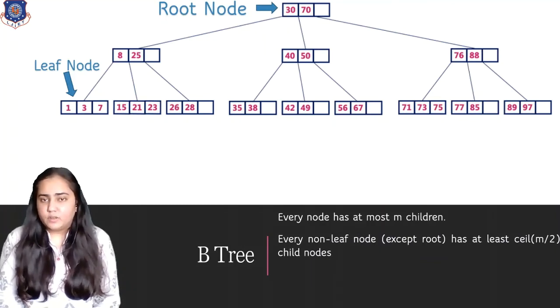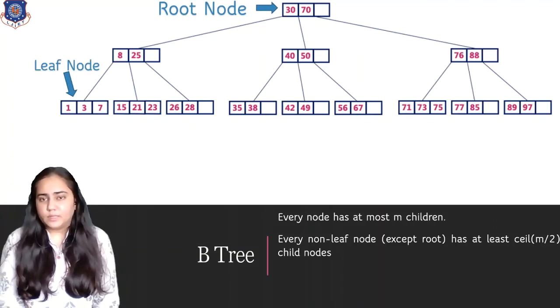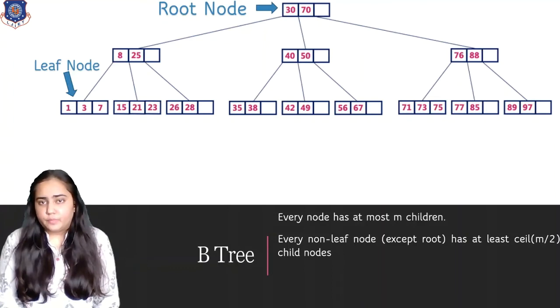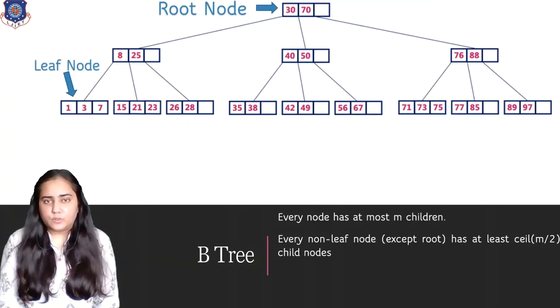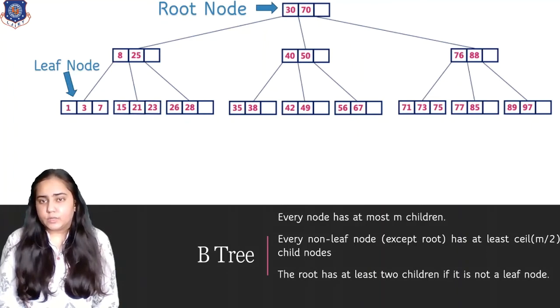The next rule is that every non-leaf node except the root must have at least ceiling m by 2 child nodes. So other than the root, whatever non-leaf nodes are present, for example in the second level, they must have at least ceiling m by 2 child nodes. In this case, the tree permits maximum four children per node, which means each non-leaf node must have at least 4 by 2 children, which is two children. And you can see all the nodes below the root, other than the leaf nodes of course, they all have more than two children.